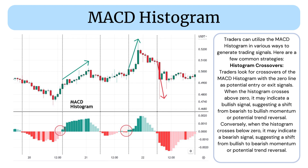Histogram Crossovers: Traders look for crossovers of the MCD Histogram with the zero line as potential entry or exit signals. When the histogram crosses above zero, it may indicate a bullish signal, suggesting a shift from bearish to bullish momentum or potential trend reversal. Conversely, when the histogram crosses below zero, it may indicate a bearish signal, suggesting a shift from bullish to bearish momentum or potential trend reversal.